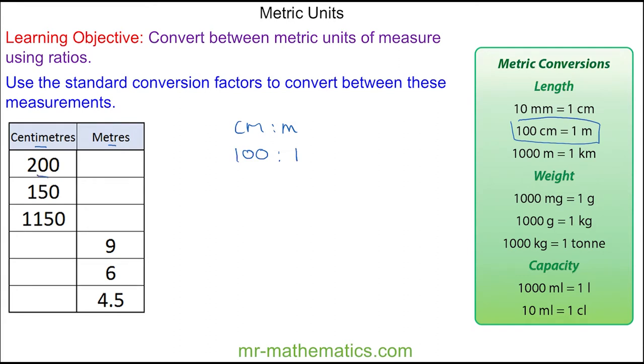To convert 200 centimetres, we'll multiply the 100 by 2. We'll do the same to the metres. And 1 times 2 is 2. So 200 centimetres is 2 metres.